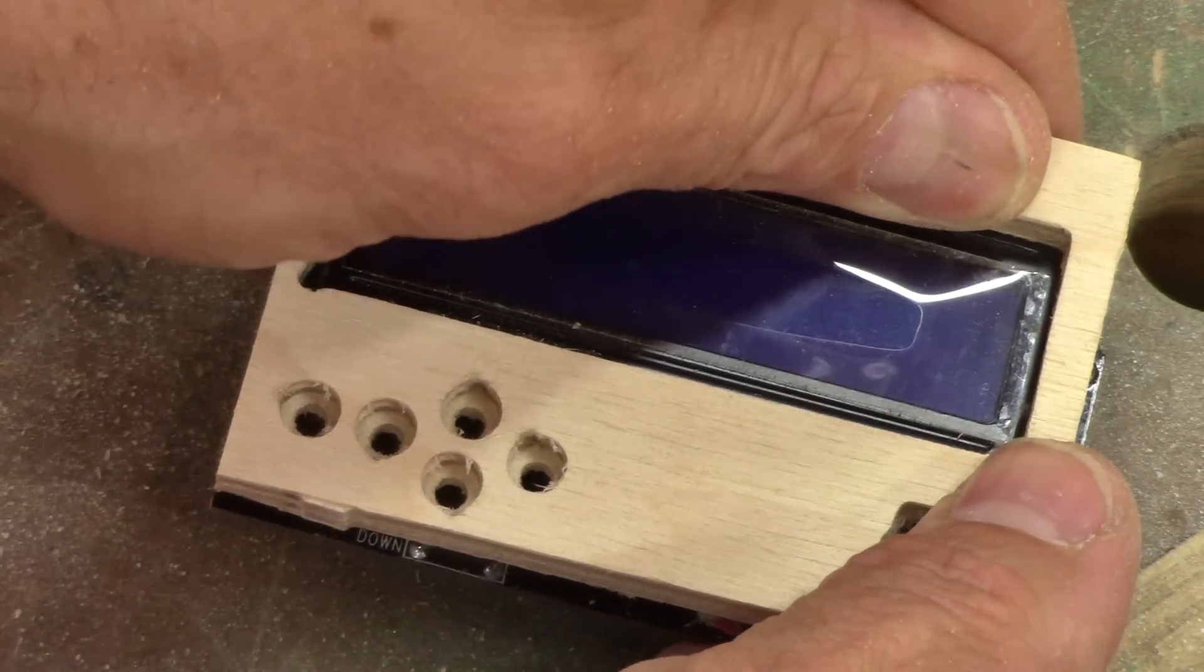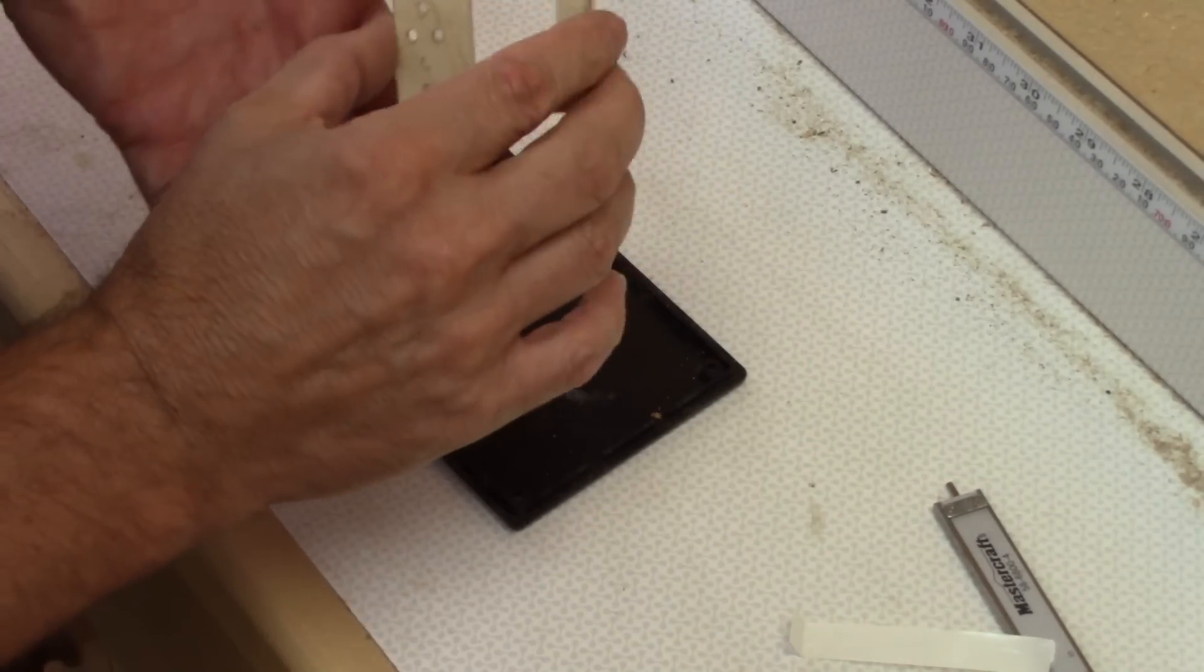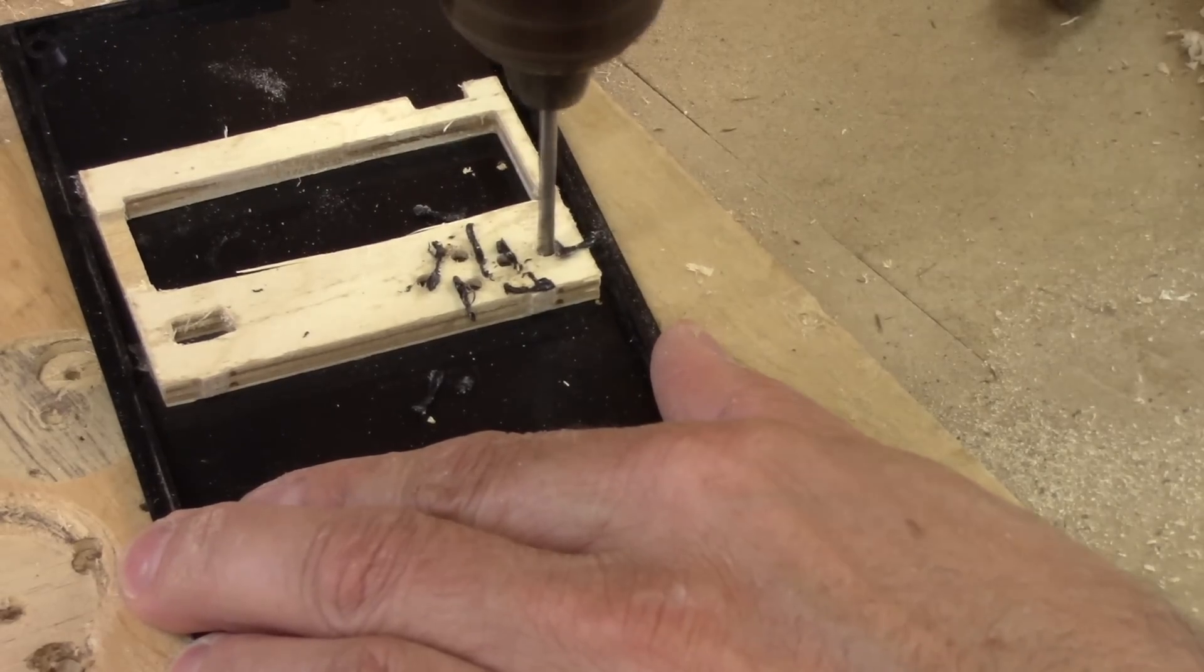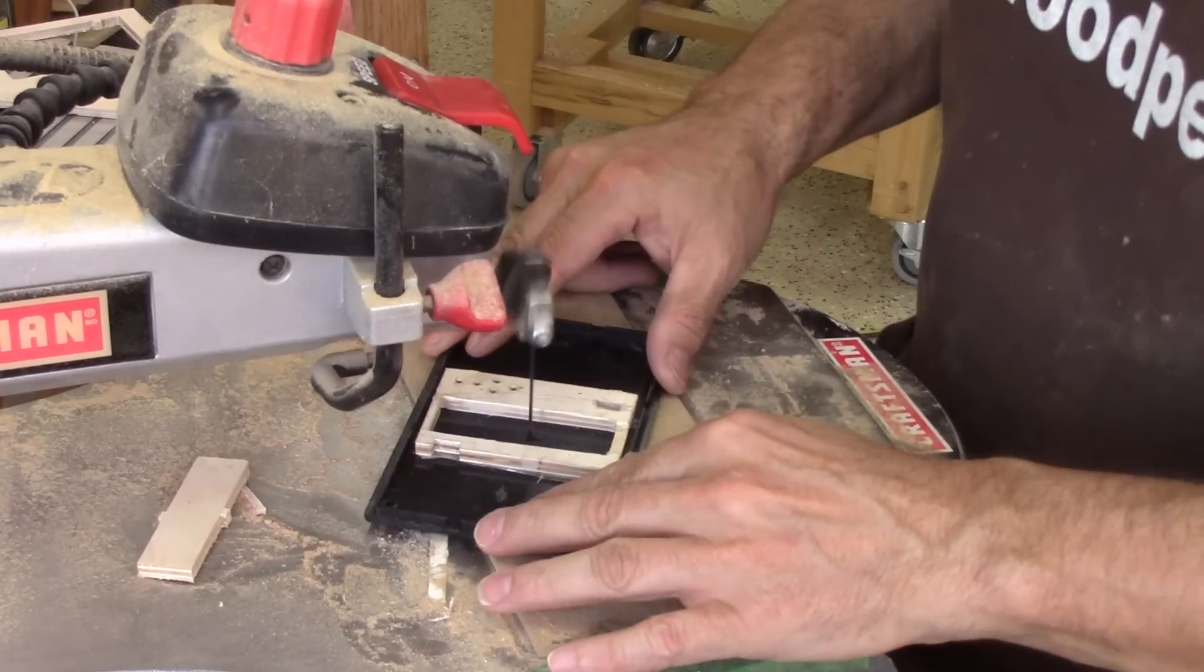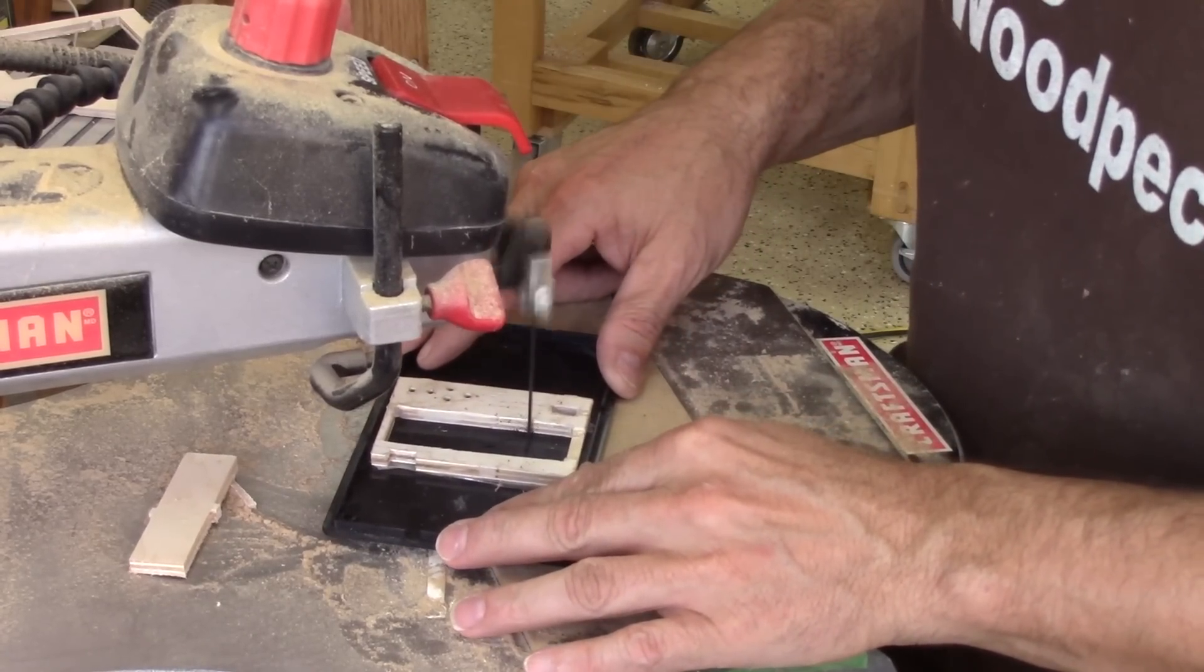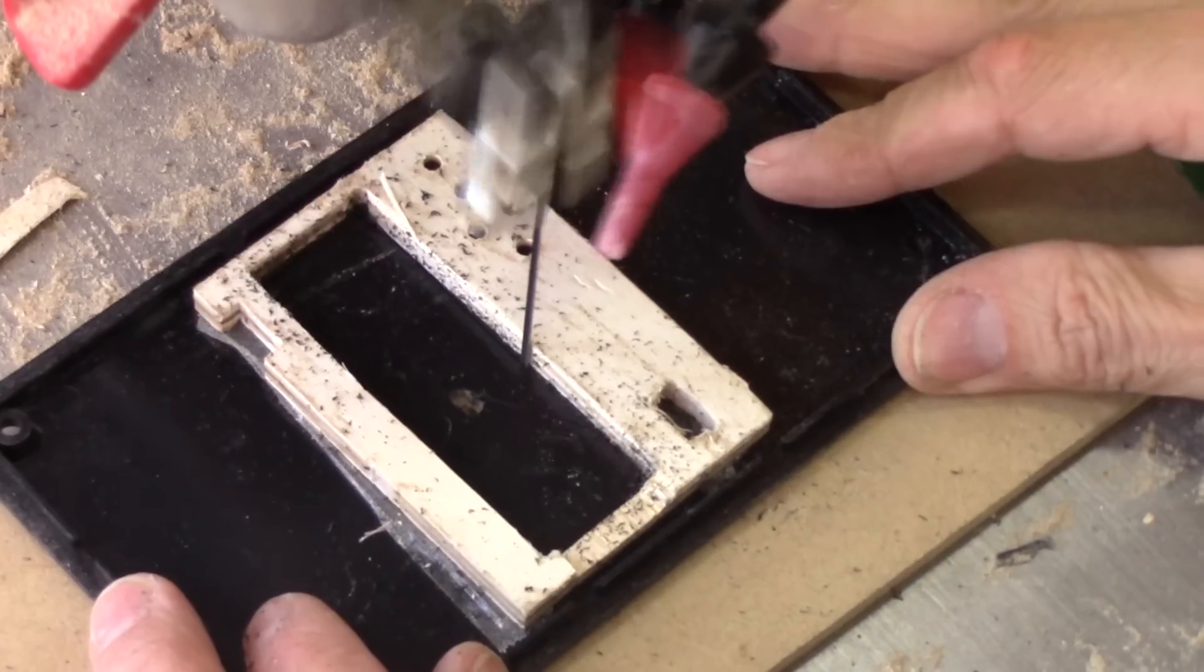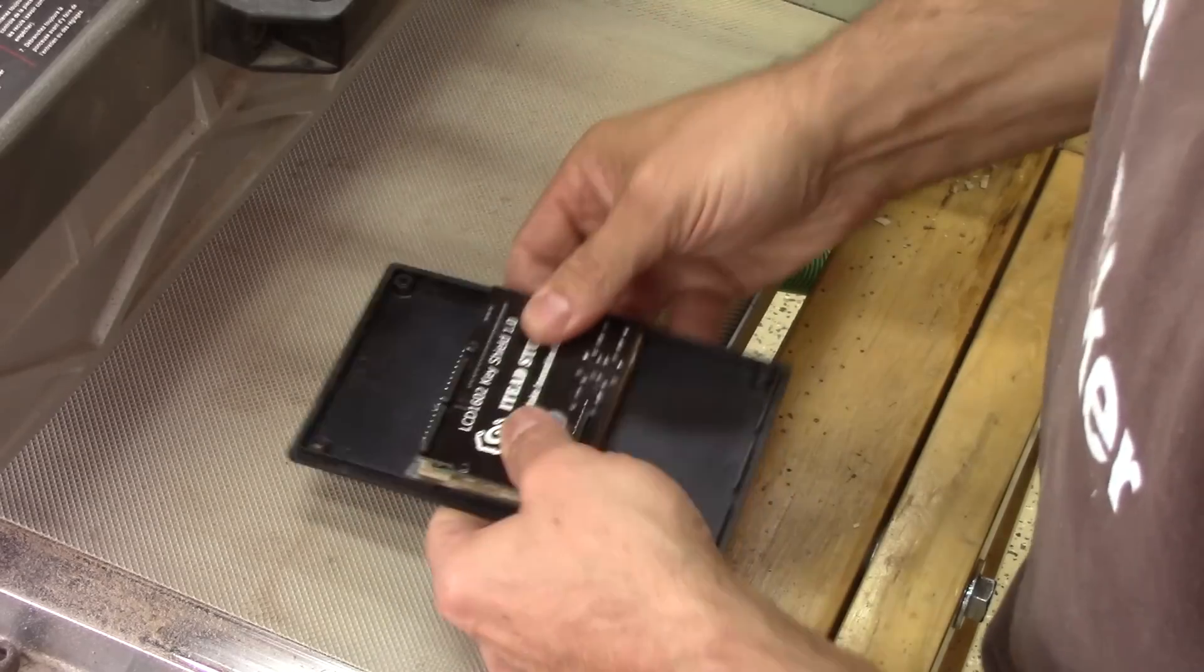This will be perfect. I need to drill the plastic box now. I begin by sticking the wooden pattern inside the cover and drill for the buttons and the display. Then, using the scroll saw, I cut the display hole. This is not that bad.